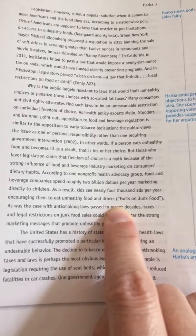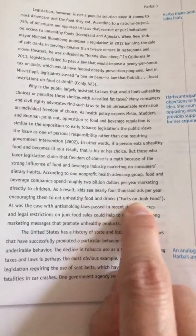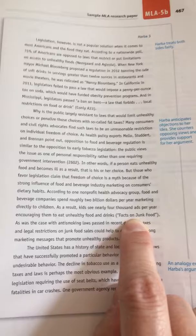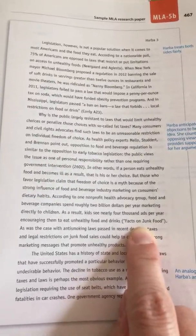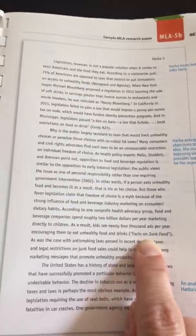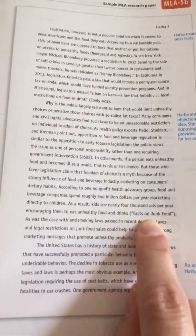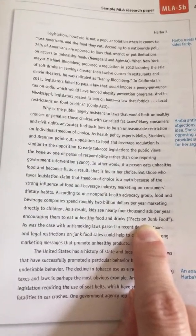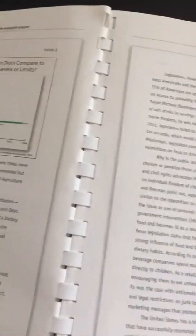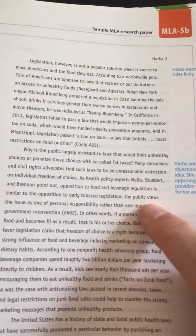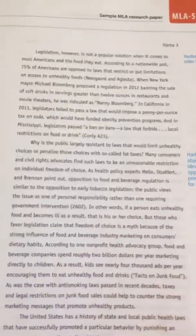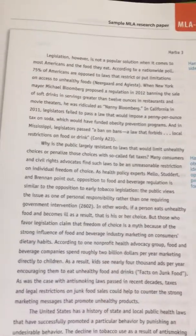Also down here: 'Kids see nearly 4,000 ads per year, encouraging them to eat unhealthy food and drinks.' She got this from Facts on Junk Food. If you ever use numbers or statistics in your work, you have got to cite it, because I know that you didn't go out and investigate or poll all the kids. Also notice that she does deal with the counterclaim — there's always an opposite side to your argument that you need to address.